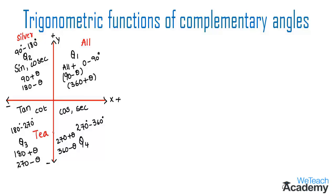In quadrant 3, we get T from the formula. T stands for tan and its reciprocal cot, so tan and cot are positive in quadrant 3. In quadrant 4, we get cups — C stands for cos, so cos and its reciprocal secant are positive in quadrant 4. This is the simpler way — all silver tea cups — to remember trigonometric functions of complementary angles.